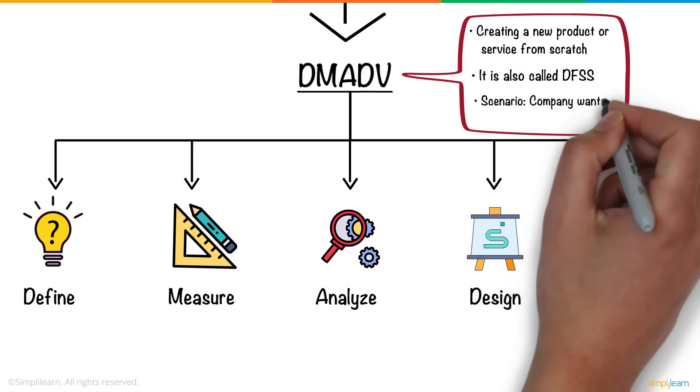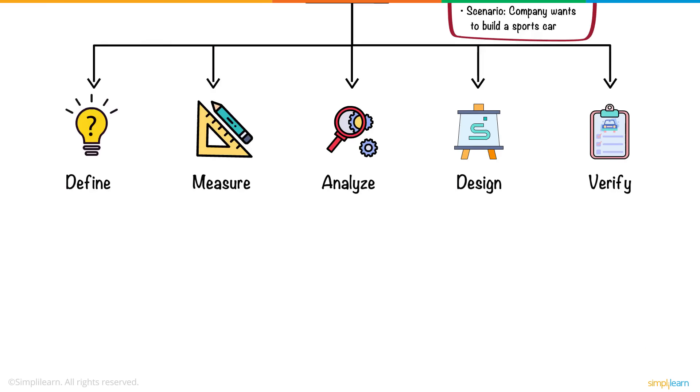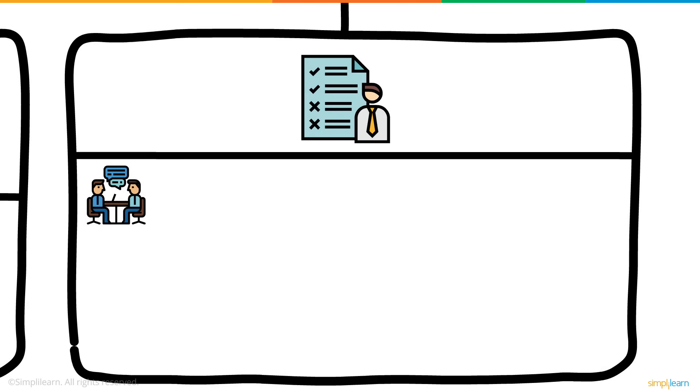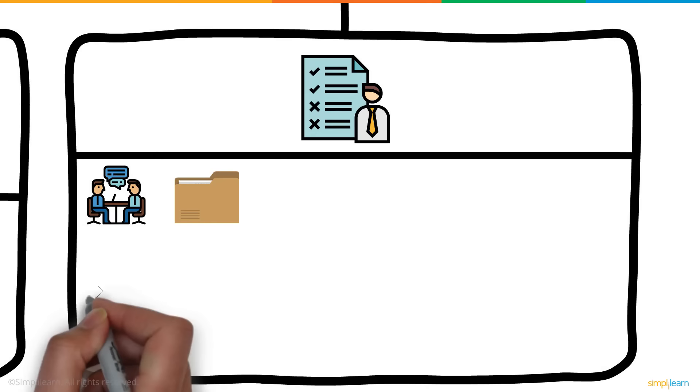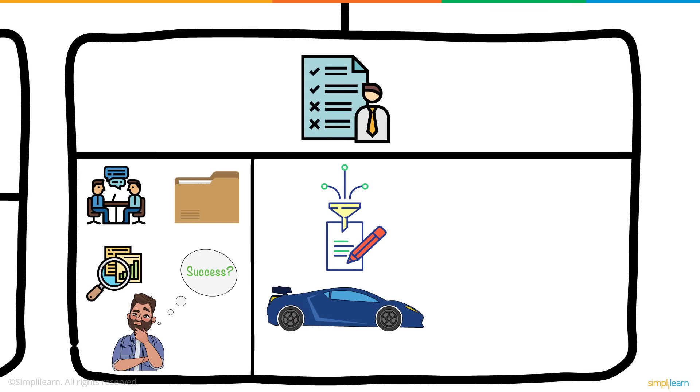Let's take the scenario where the company decides to build a new model, a sports car. In the Define phase, you define the requirements of the customer. Based on inputs from customers, historical data, industry research, you determine what you need to ensure your car becomes a success. The data collected indicates customers are drawn to cars which can achieve more than 150 mph.